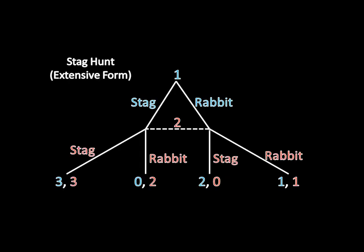Now we can look at this in terms of an extensive form game. This is the exact same game as we saw in the strategic form, just now in the form of a game tree. Player one is still choosing whether to hunt a Stag or a Rabbit, and player two — because of this dashed line indicating that player two doesn't know whether player one hunted a Stag or a Rabbit when she moves — is also choosing to hunt a Stag or a Rabbit. The payoffs here are exactly the same as what we saw in the strategic form game, so there are still two pure strategy Nash Equilibria: the Stag-Stag Equilibrium and the Rabbit-Rabbit Equilibrium. Now what I'm going to do next is add a move for player one at the beginning of the game that is never going to be chosen in equilibrium, and yet the presence of that move is going to remove one of the Nash Equilibria, leaving a single unique equilibrium.